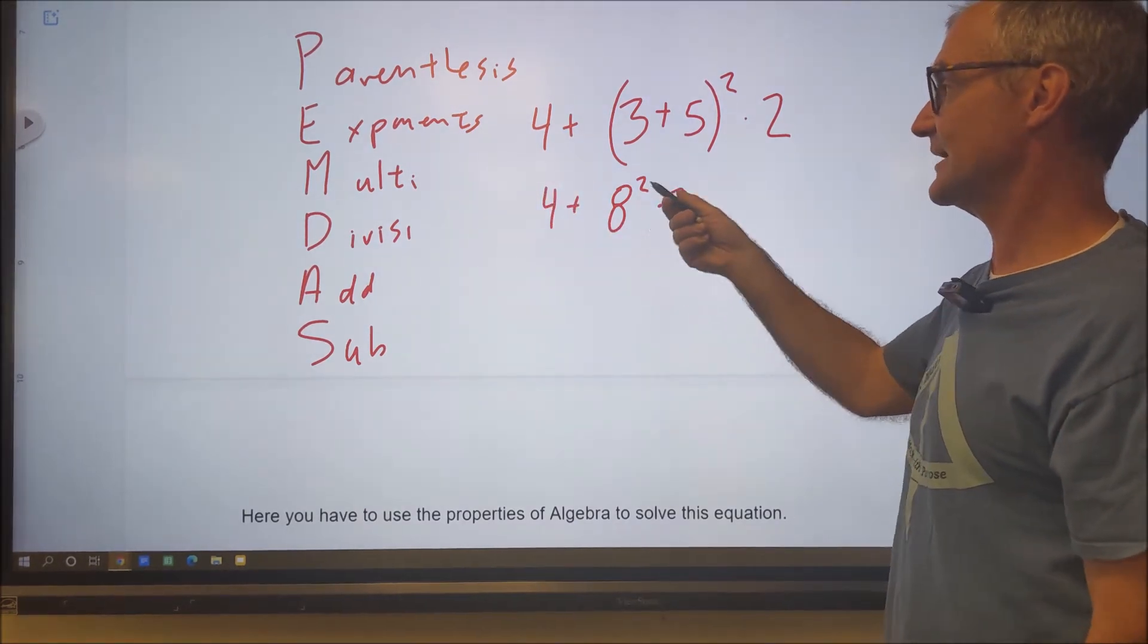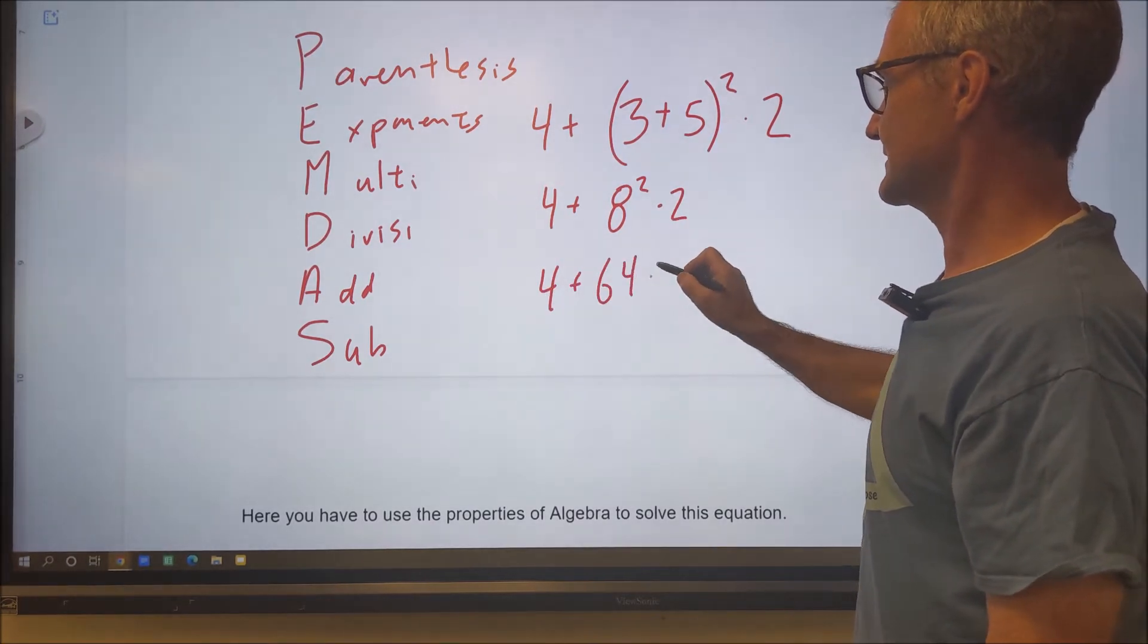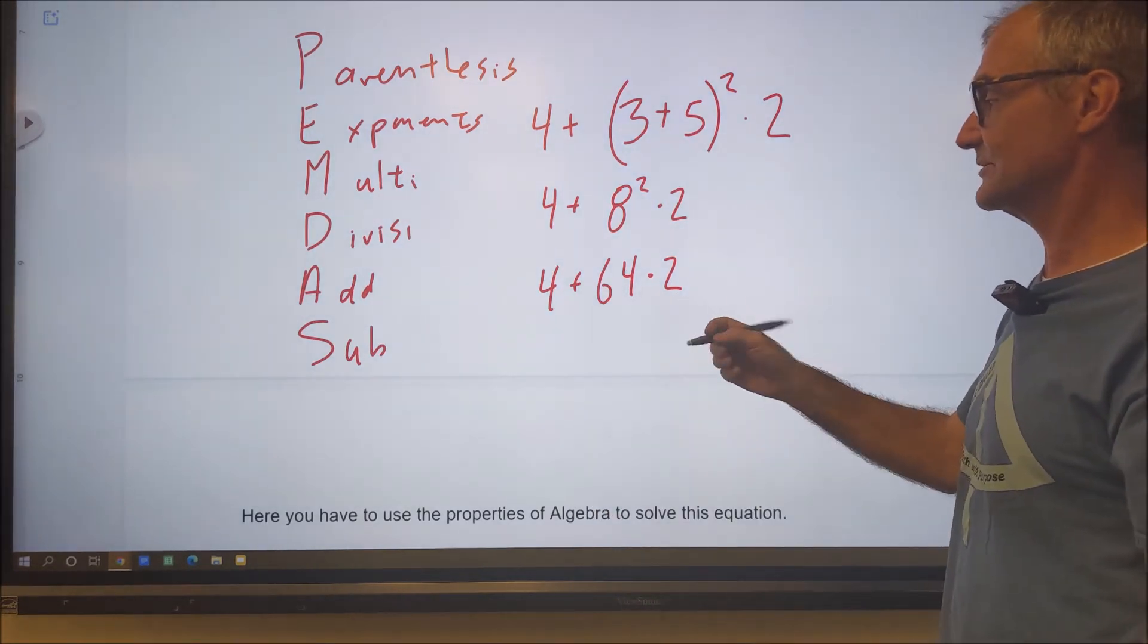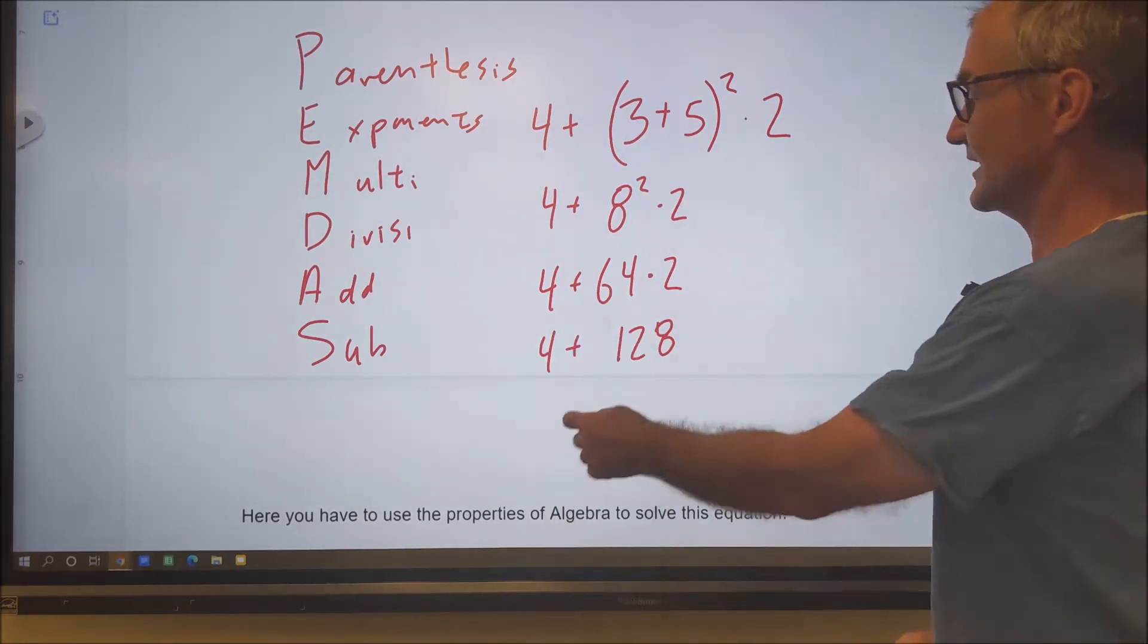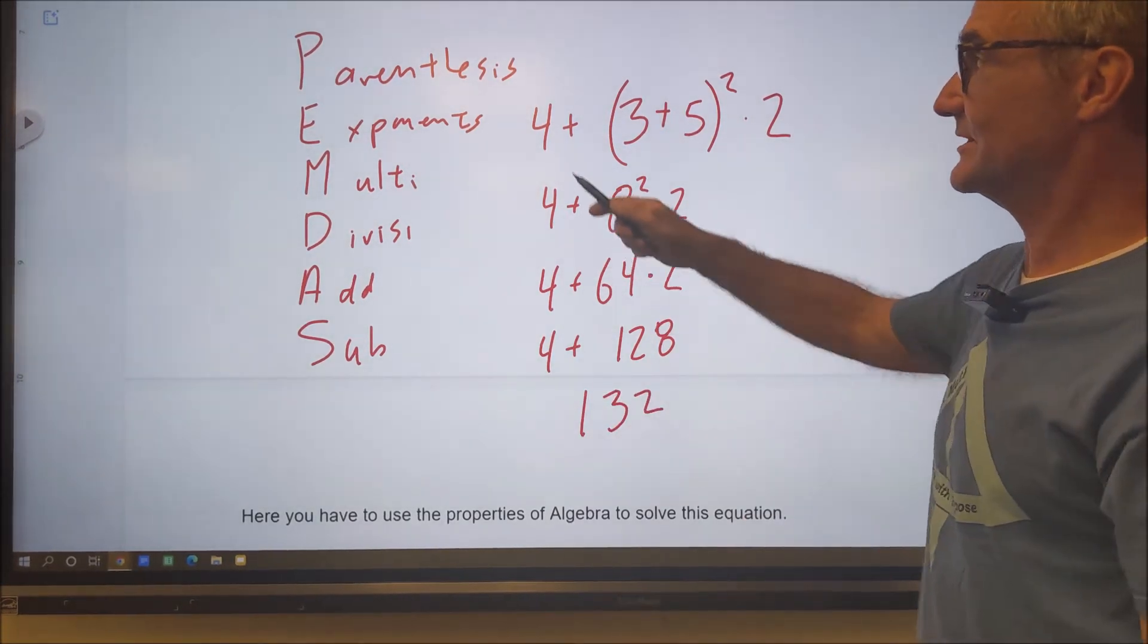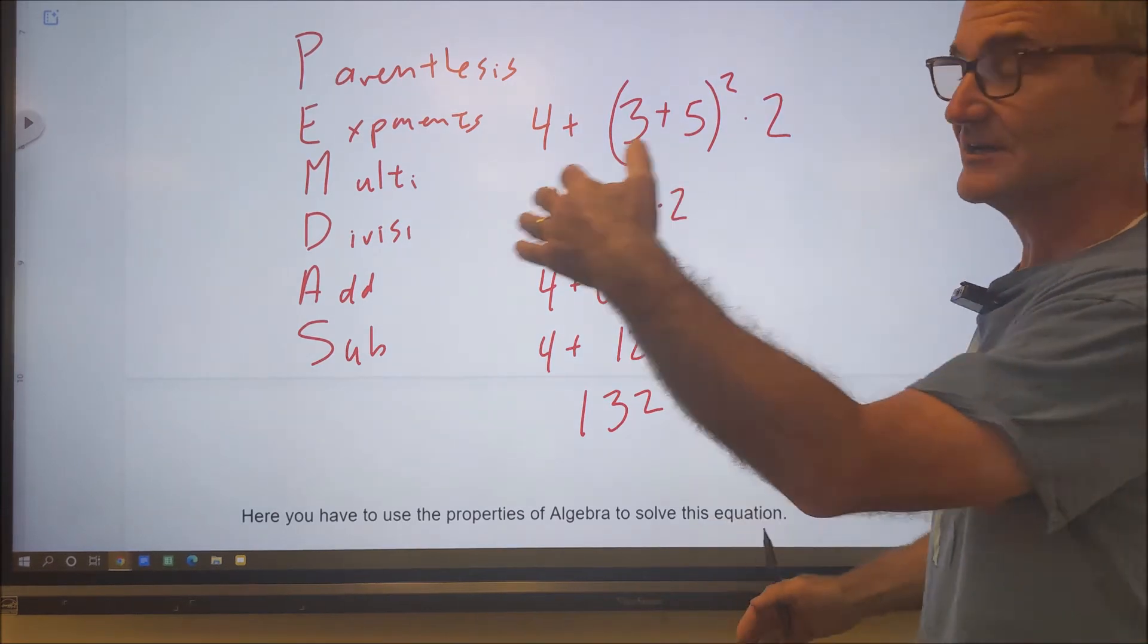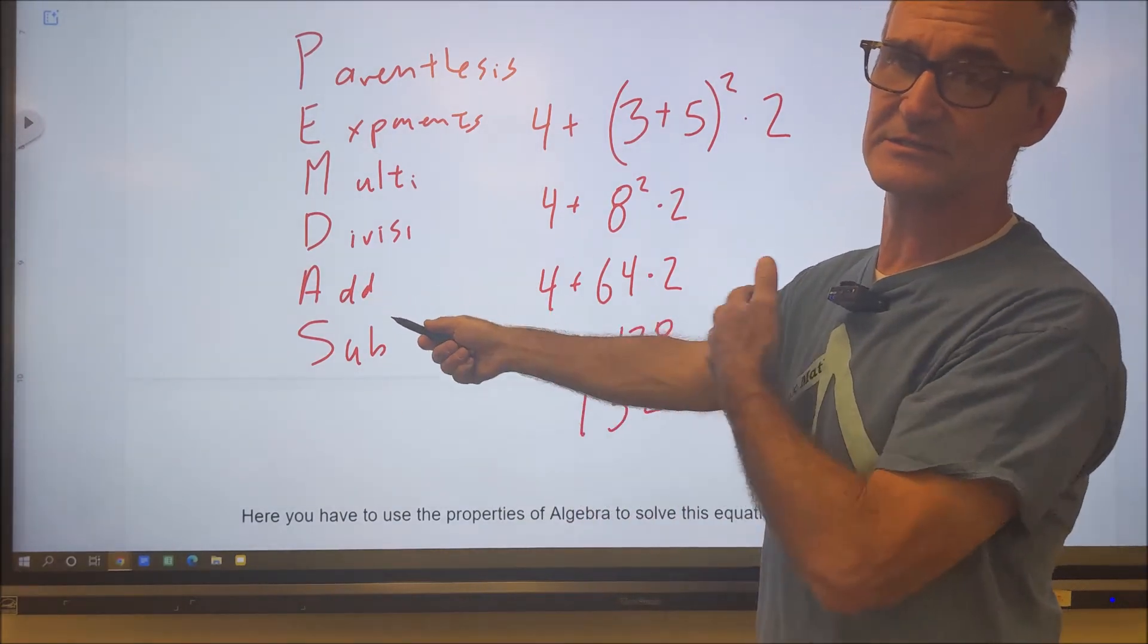So I go 4 plus 8 squared, 64, times 2. And then now that I've done that, my next order of operations is multiplication. So I go 64 times 2, 128. So I've done multiplication before addition. Then I have 4 plus 128. So then my final answer is 132. So again, the order of operations, you do your parentheses first, then your exponents, then multiplication, then division, addition, subtraction from left to right of any one of these.